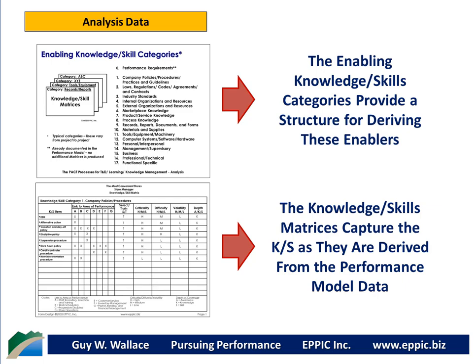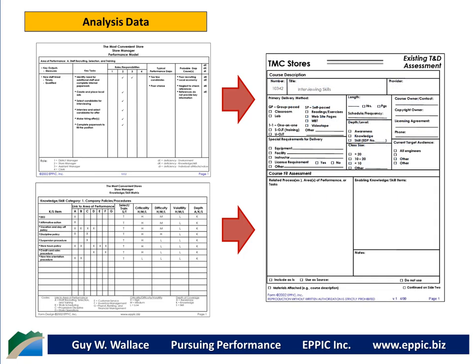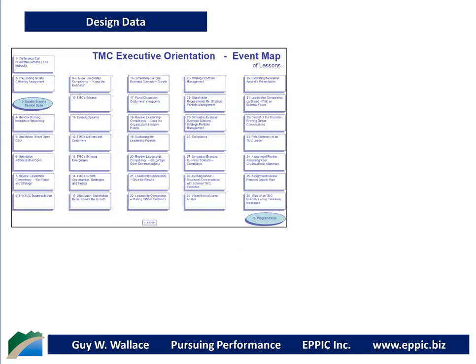The performance model data and the knowledge and skill data are then used to systematically assess existing content, existing training and development for reuse purposes — reuse either as-is or after modification. The intent is to salvage the shareholders' prior investments in training and development and to avoid reinventing the wheel. This is then captured on an existing training and development assessment form, documented for use in the design phase that follows the analysis phase.